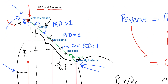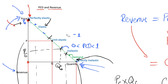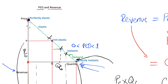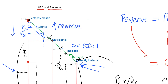If we are at any point in the elastic side of our demand curve, decreasing our price will increase revenue. For example, if we have a price of P7, we can decrease it to P8 and that will increase our revenue. We can keep decreasing our price until we reach the unit elastic midpoint, and that will be our maximum revenue.